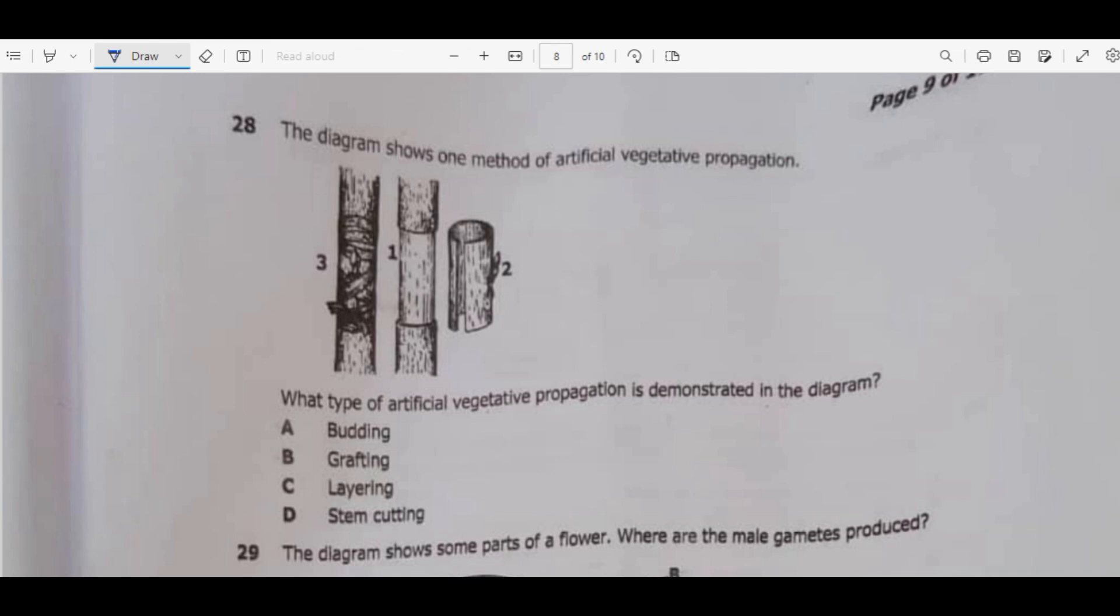We go to question 28. The diagram shows one method of artificial vegetative propagation. What type of artificial vegetative propagation is demonstrated in the diagram? From the diagram, there was this bud which was cut from this plant, then it was inserted on another plant. So this type of artificial vegetative propagation is budding. Don't confuse budding with grafting. Grafting has to do with you cut two different plants, like a lemon and an orange plant, then you connect them to make one. That's grafting.